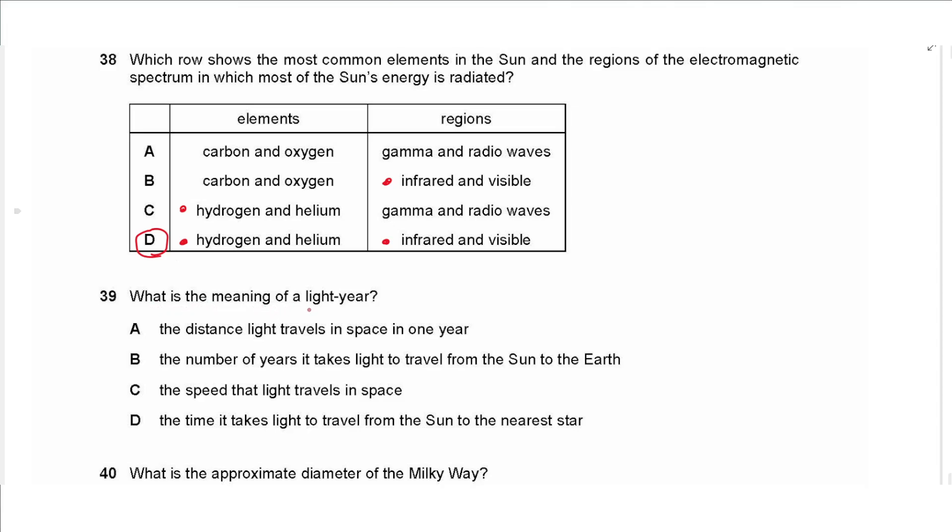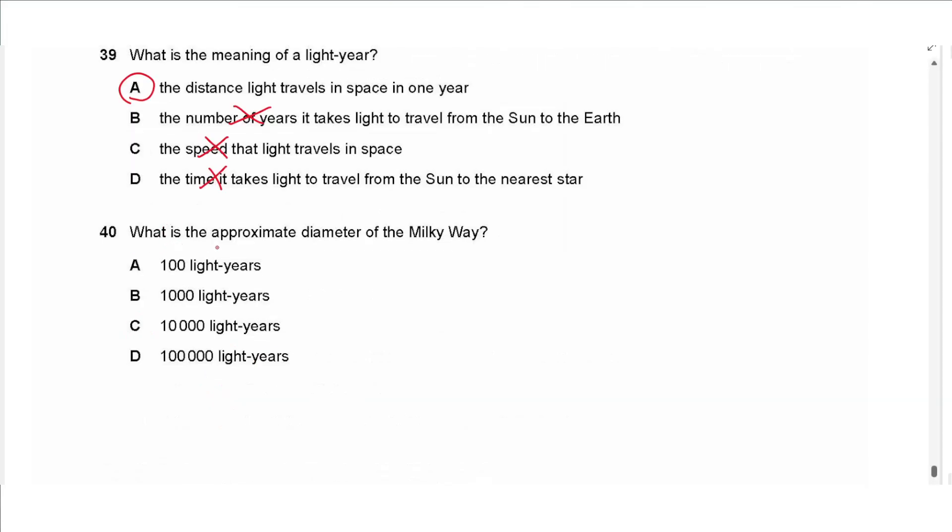Question 39 says what is the meaning of a light year. That is the distance traveled in one year, so the choice is A. It is not number of years, it's not time, it is not speed. Again it is not time, so we choose A.